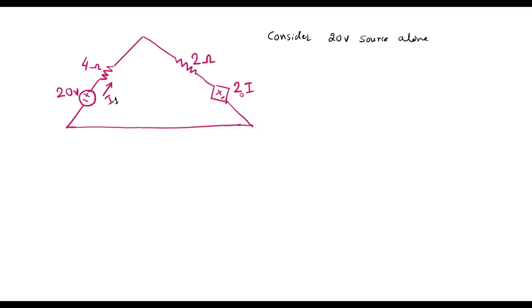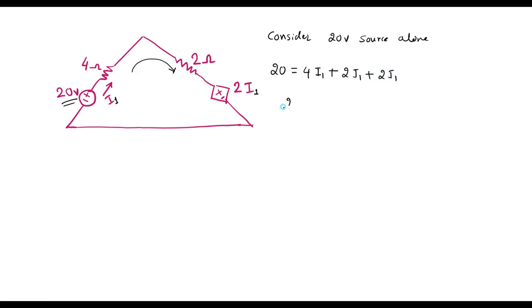We have a dependent source which is dependent on current I. When the current is I1, the dependent source will also become I1. As there is only one loop, current I1 is flowing in the circuit. Applying KVL: 20 equals voltage across 4 ohm which is 4 times I1, plus current through 2 ohm which is 2 times I1, plus the dependent source 2I1. Simplifying: 20 equals 8I1, so I1 equals 20 divided by 8, which equals 2.5 amp.